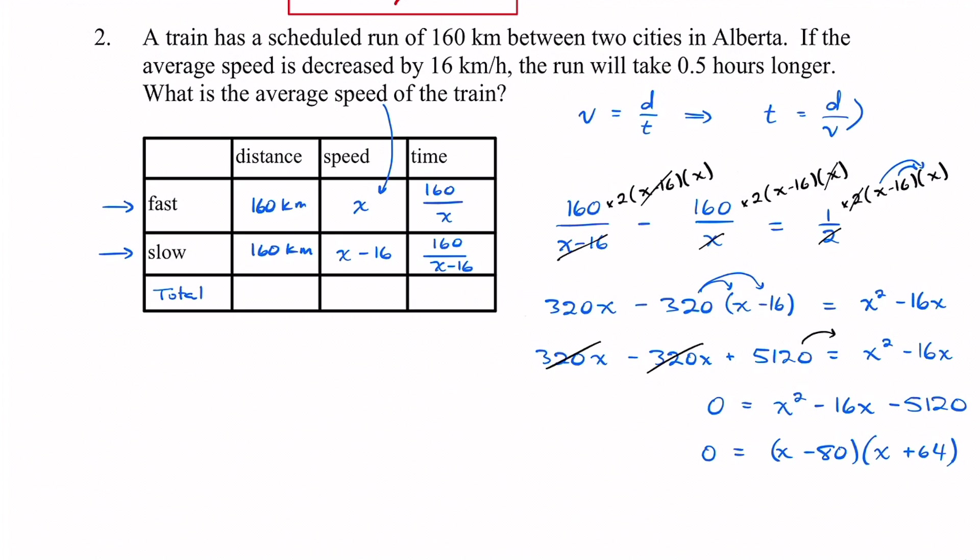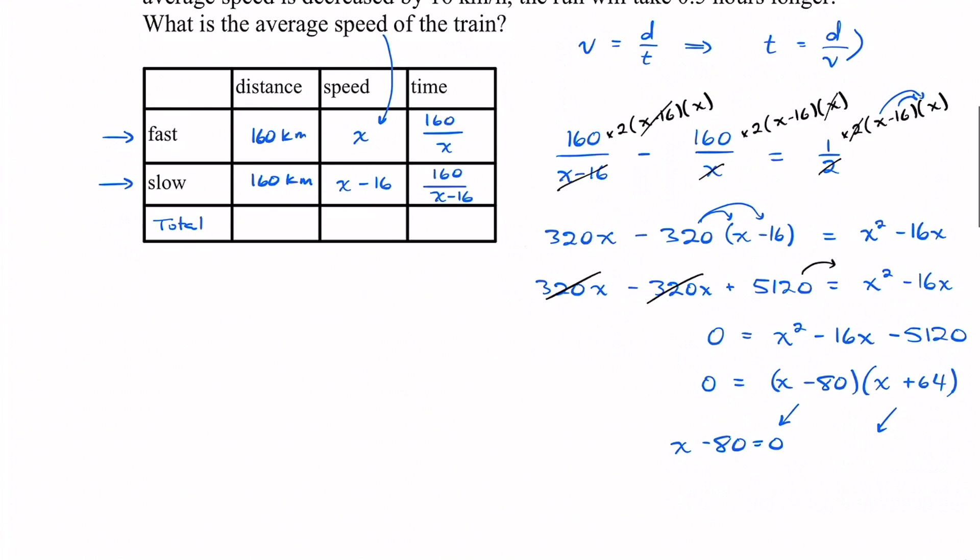Now all we've got to do is we've got to take each of these and set them equal to zero. So we're going to have x minus 80 equals zero, and then add 80 onto both sides, so you just get x is equal to 80. And then with the other one we've got x plus 64 equals zero, and then subtract 64 from both sides, so you get x equals negative 64.